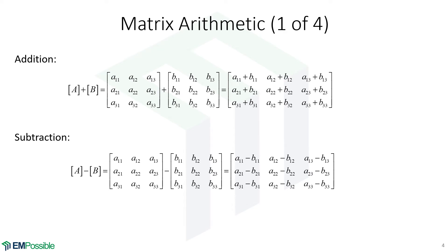A very similar thing for subtraction. The (1,1) element in the difference matrix is A(1,1) minus B(1,1). The (1,2) element in this matrix is A(1,2) minus B(1,2). We just go element by element and fill in the difference matrix. And that's subtraction.